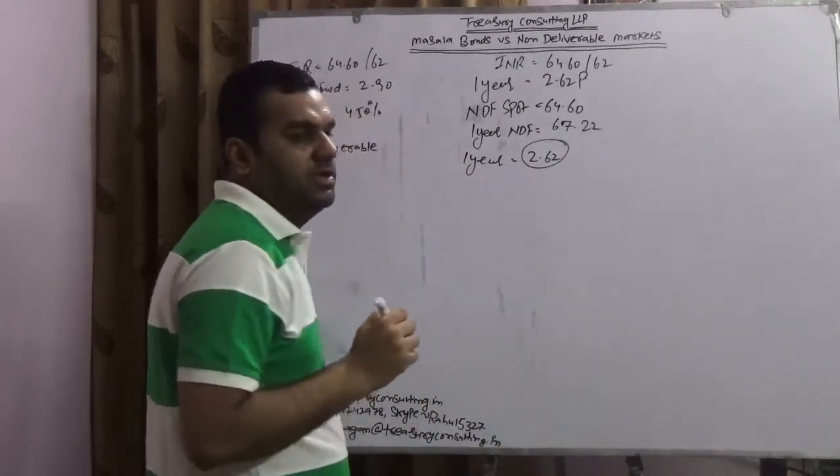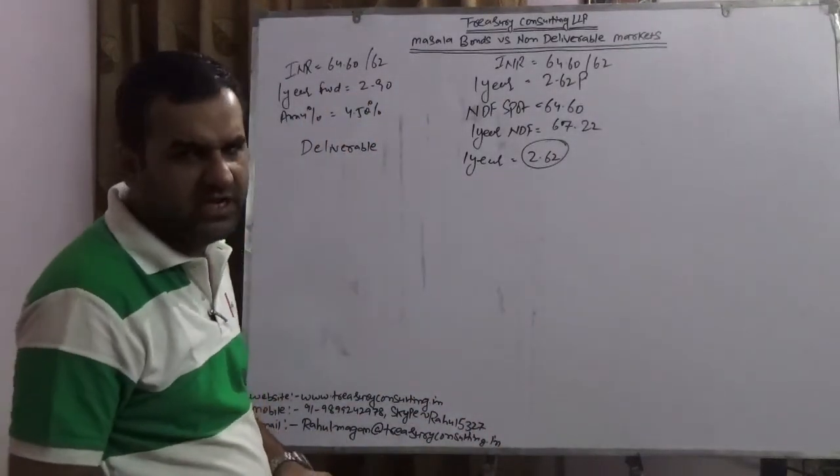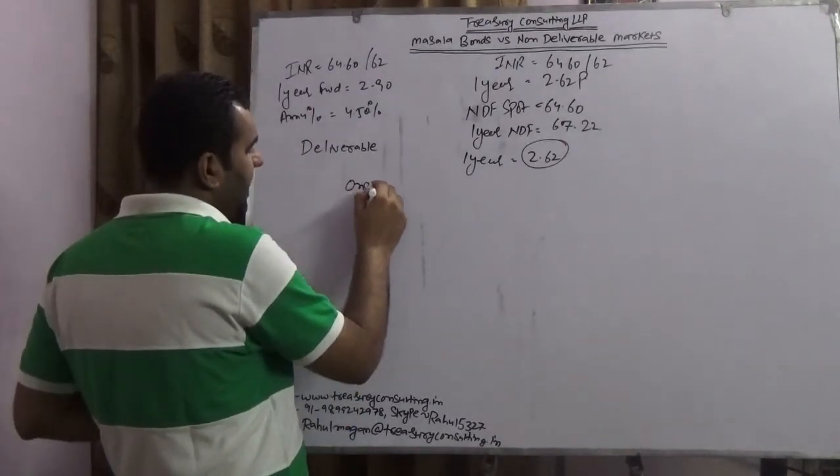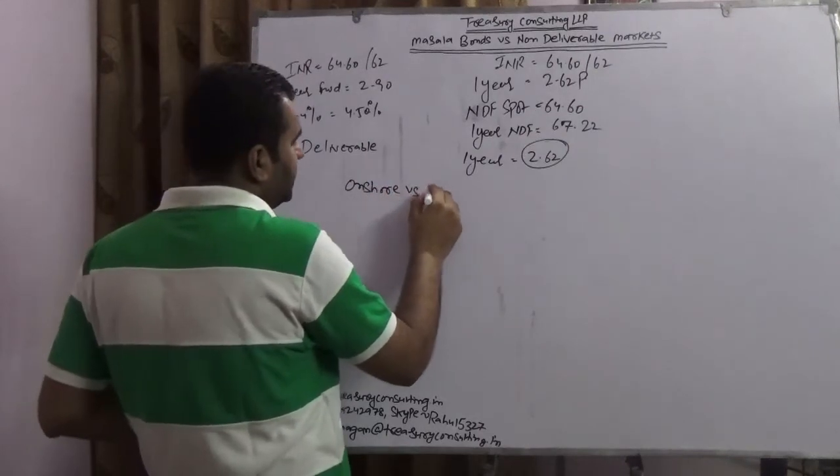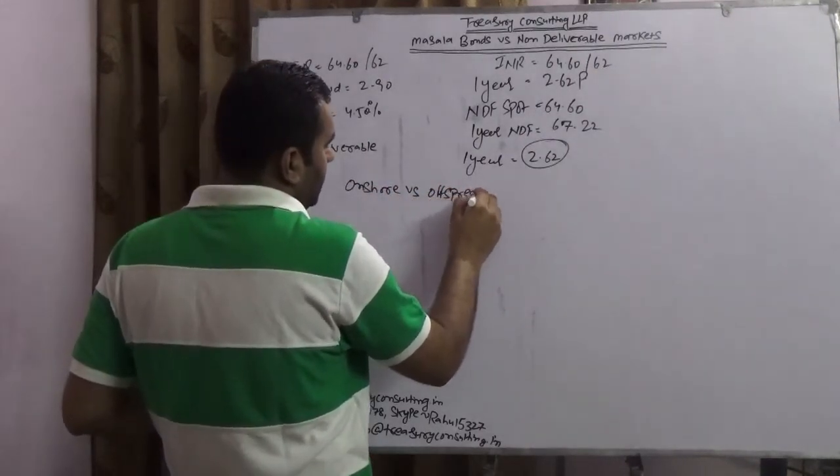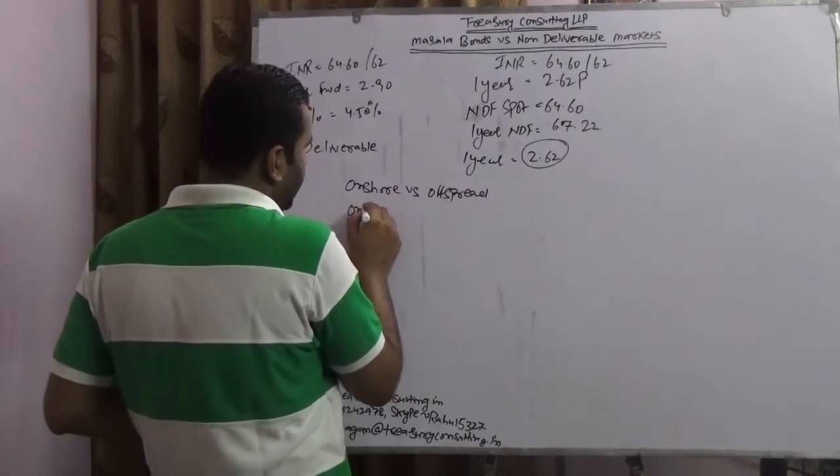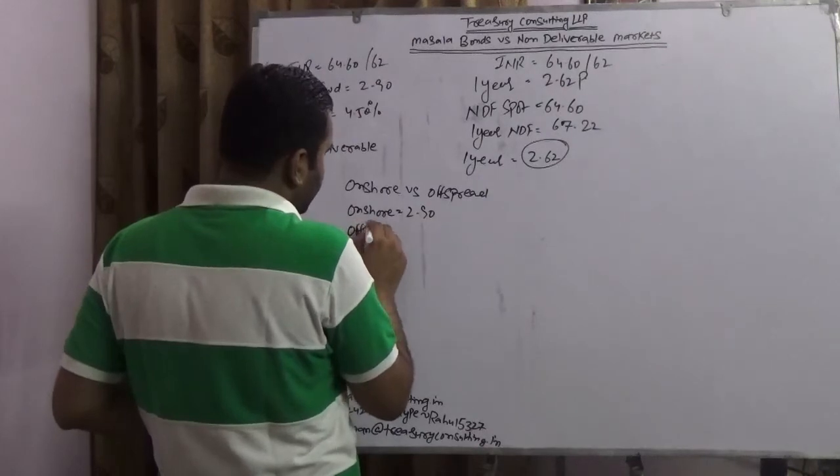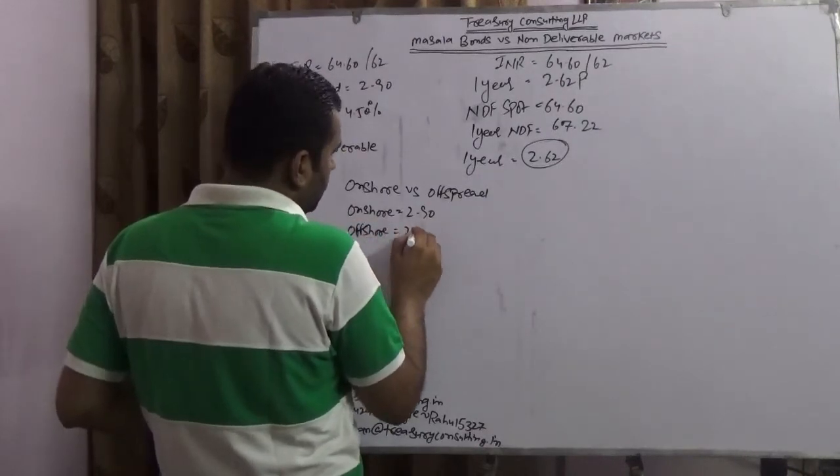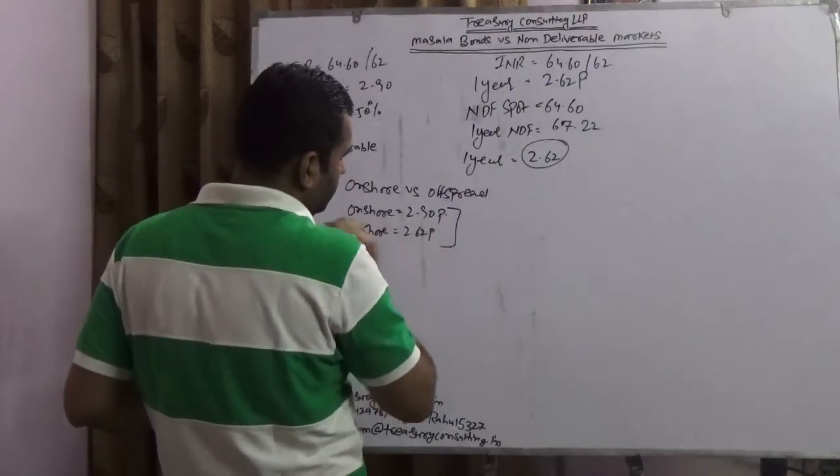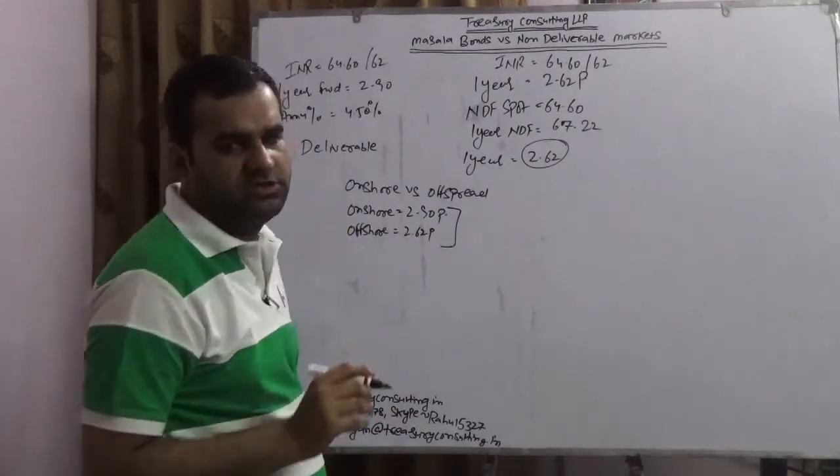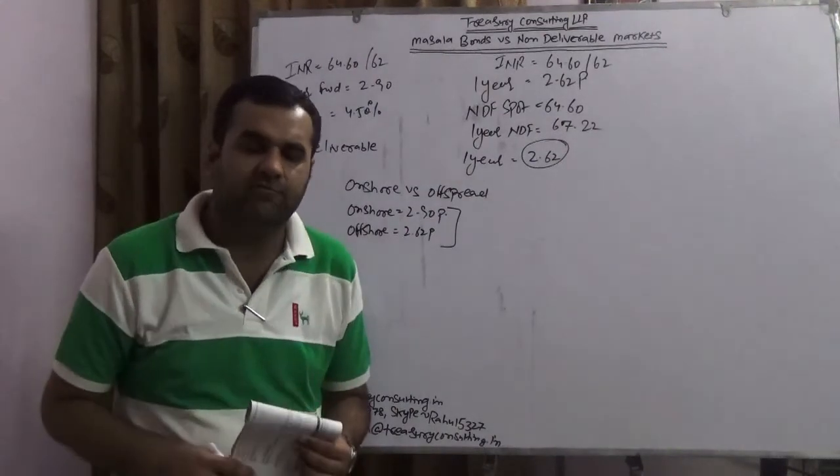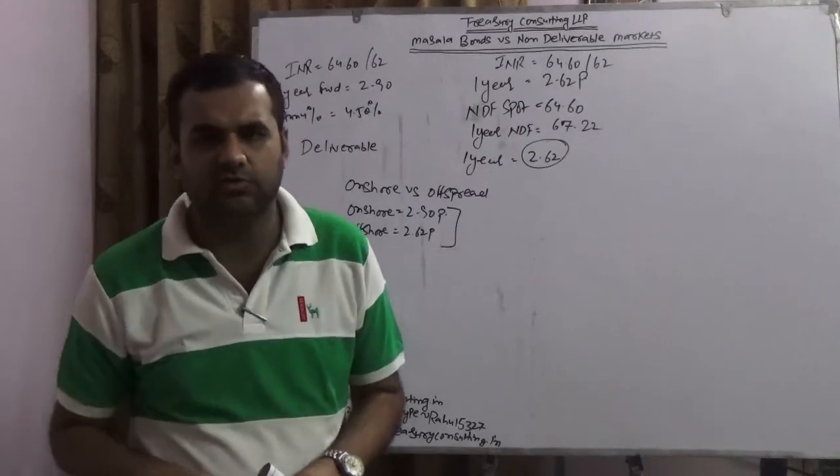So the one-year premium is turning out to be 2 rupees 62 paisa. Number one opportunity which we are generating for a Masala trader is in our foreign exchange language known as onshore versus offshore spread. Onshore is trading at 2 rupees 90 and offshore is trading at 2 rupees 62 paisa. The logic is quite clear: onshore-offshore spread exists, it was existing, it is existing, and it would continue to exist.